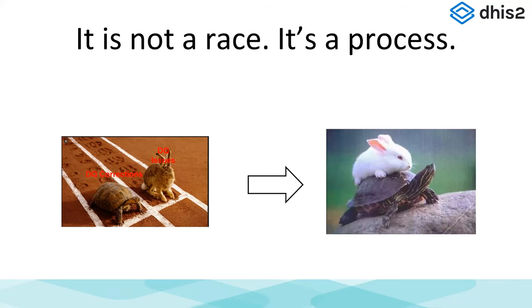What we need to appreciate is that we have to build a process where data quality issues and data quality corrections move together at the same speed. We're talking about routine data quality corrections — standard operating procedures that are integral to our entire operations within our information system. Everything moving together, everybody knows their job, and we're utilizing all the tools available to us to stay on top of this.